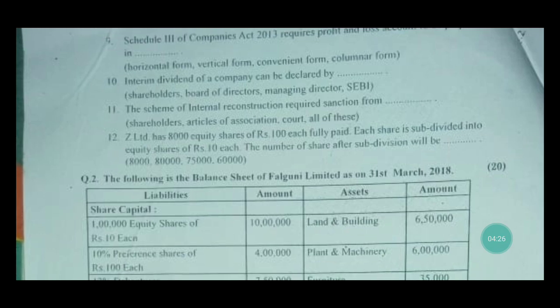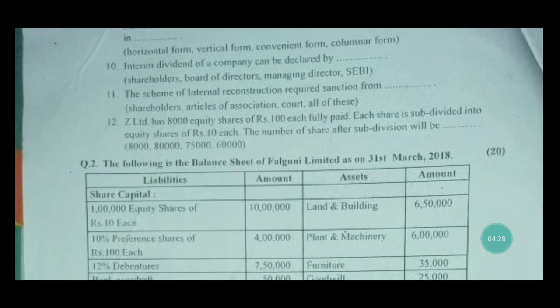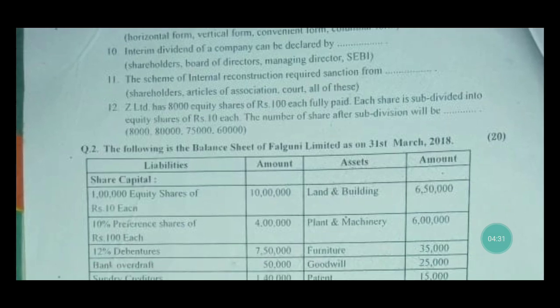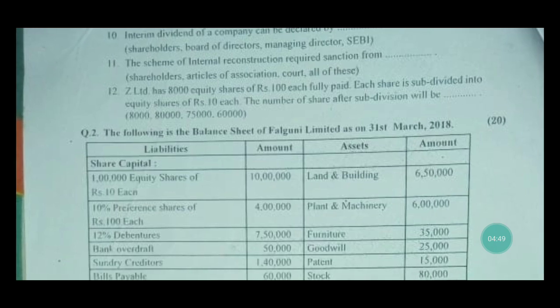Z Limited has 80,000 equity shares of ₹100 each, fully paid up. Each share is subdivided into equity shares of ₹10 each. The concepts here are subdivision and consolidation — shares remain the same, just the face value changes. The number of shares after subdivision will be 8,00,000 shares.